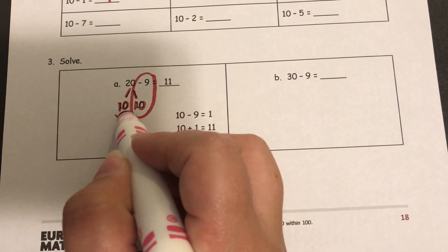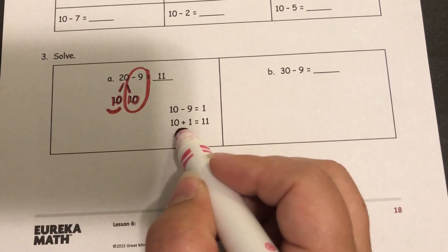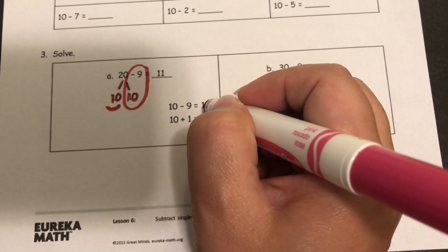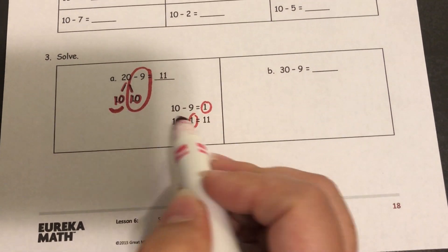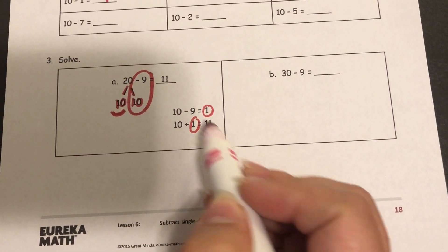10 minus 9 gives us 1. And now I have this extra 10, so I'm just gonna add it back in. So I have my 1, same 1, and then I add this 10 back in to get the answer of 11.